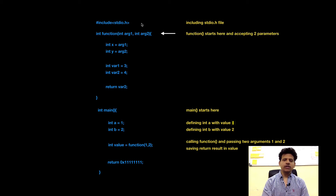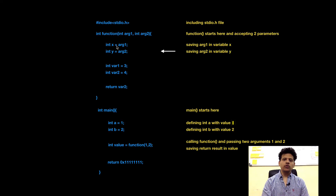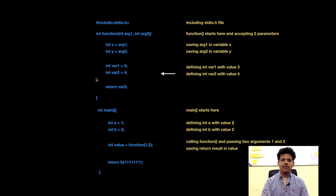We are in function. Function is accepting two parameters, arg1 and arg2. Then function is saving arg1 into the variable x and saving arg2 into the variable y. After that, function is declaring new variable: integer arg1 equals 3, var2 equals 4.